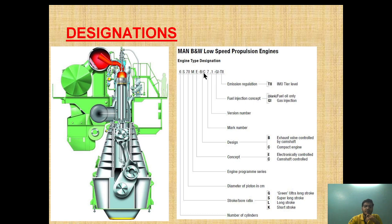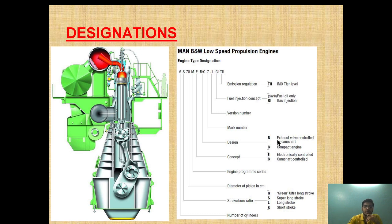B or C indicates the version of the electronic series. When the ME engine first came out, it came with the exhaust valve controlled by the camshaft — that was the ME-B series. After modification, the camshaft-controlled exhaust valve was replaced, and it is now known as the compact engine, the ME-C series.